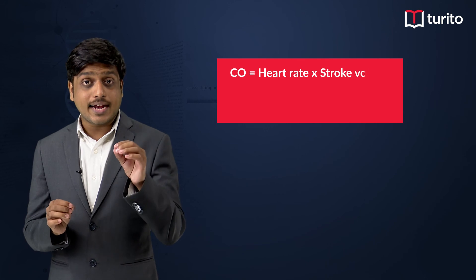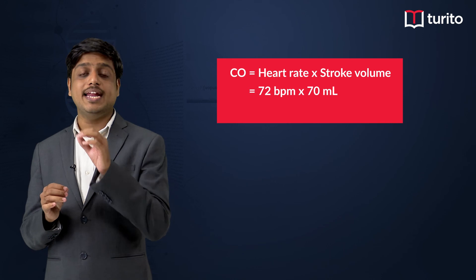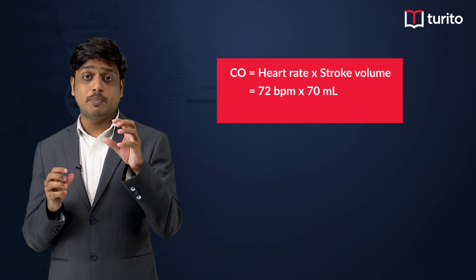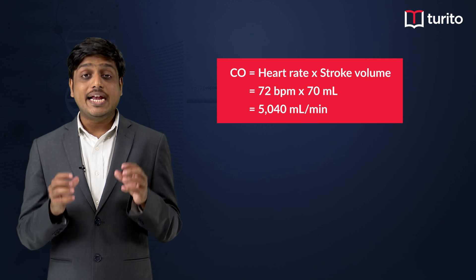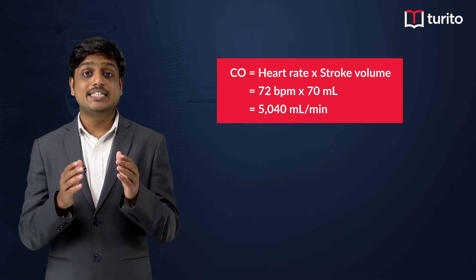Before concluding, let us also learn about cardiac output. Cardiac output explains the amount of blood pumped out of the heart per minute. The cardiac output in humans can be calculated as the product of the heart rate and the stroke volume. The heart rate in humans is usually 72 beats per minute, and the stroke volume is 70 ml. So the product of 72 beats per minute and 70 ml gives approximately 5 liters — that is 5 liters of blood pumped out of the heart each minute.